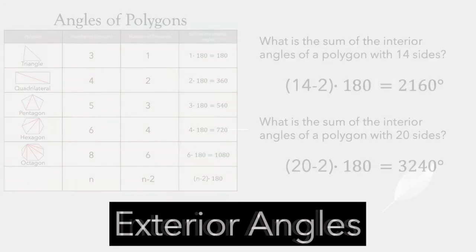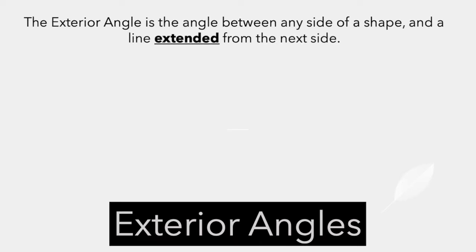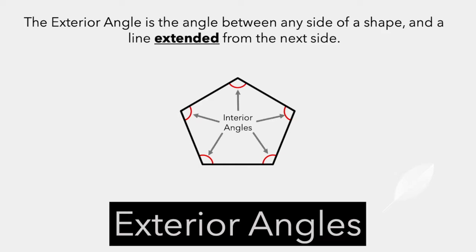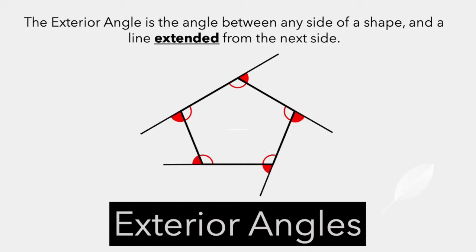We're going to transition now to exterior angles. First, let's define an exterior angle. An exterior angle is the angle between any side of a shape and a line extended from the next side. I'll show you what that means. Here we have a pentagon. Inside the pentagon we have the interior angles. If we extend one of the sides, we create an exterior angle. And each of the interior angles has a partner exterior angle.